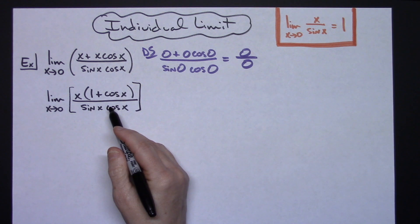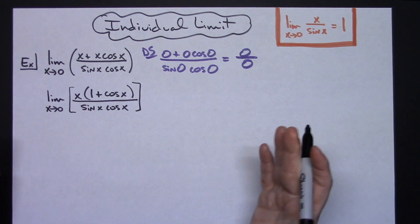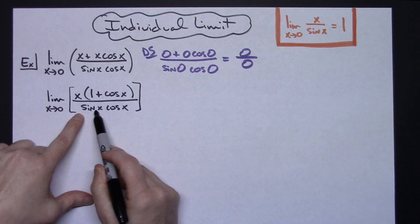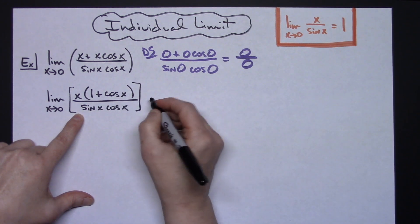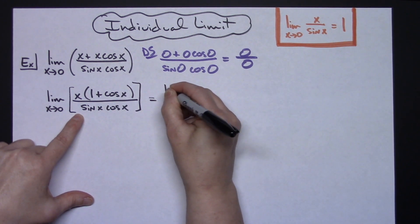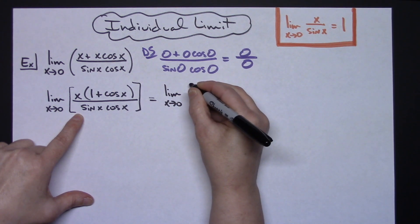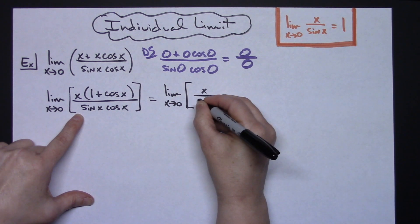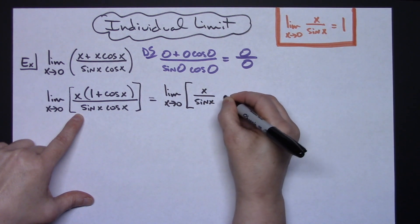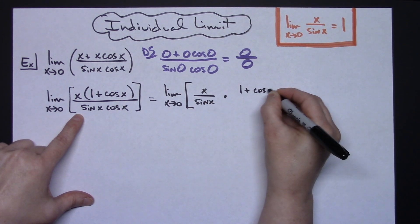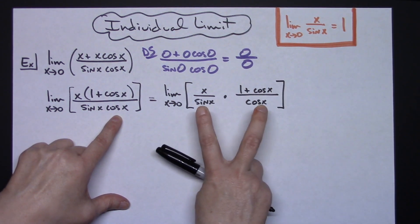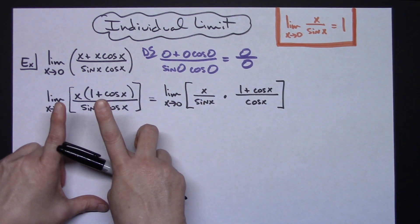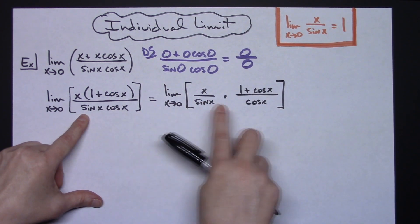I've got a rational expression, and anytime you have a rational expression you can break it up into individual fractions multiplied together. I want x over sine x in one part and everything else left over. So I'm going to write this as the limit as x approaches 0 of x over sine x, times (1 + cosine x) over cosine x. As long as you multiply them back out and confirm you get the original expression, that's a legal algebra move.